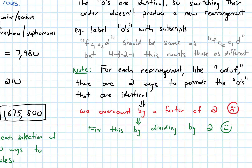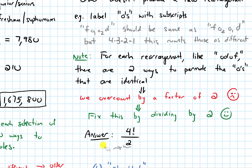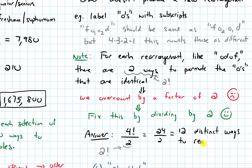By dividing by 2, we are going to get our answer. We take our initial count of 4 factorial — which was too high — and divide it by 2. Note that this 2 is the same as 2 factorial; technically there are 2 factorial ways to permute two objects. So 4 factorial is 24, divide by 2, and we get 12. There are 12 distinct ways to rearrange the letters in the word 'food'.